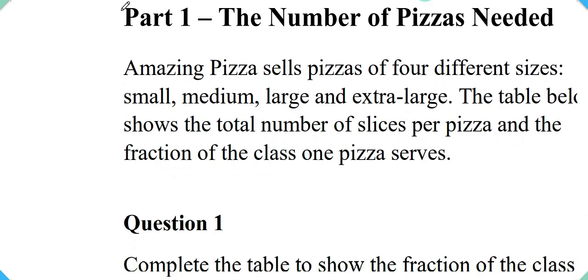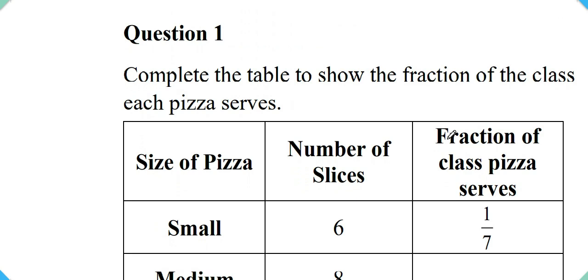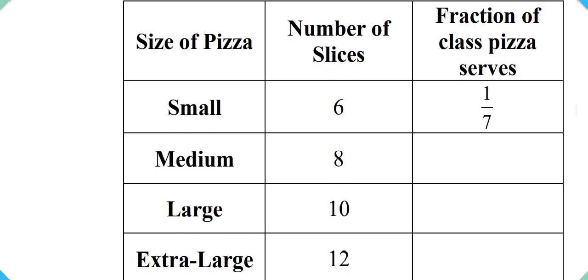Part one: the number of pizzas needed. Amazing pizza sells pizzas of four different sizes: small, medium, large, and extra large. The table below shows the total number of slices per pizza and the fraction of the class one pizza serves. Here we have the question: question one, complete the table to show the fraction of the class each pizza serves. So this is our table. And the first thing that our students will ask us is what kind of information is this? There's nothing that they have observed from the information given that the small size pizza having six slices will only serve one seventh of the class, but the information is there and we're going to talk about it now.